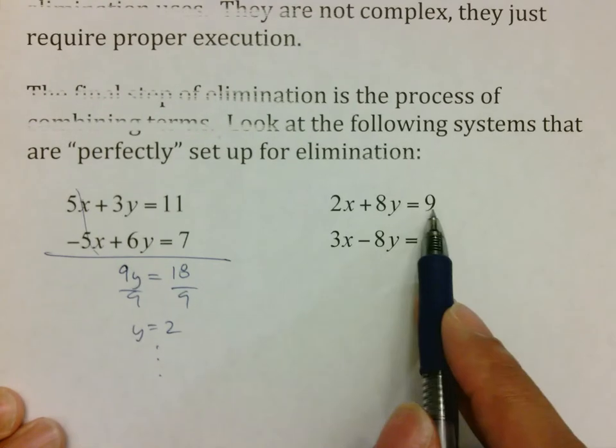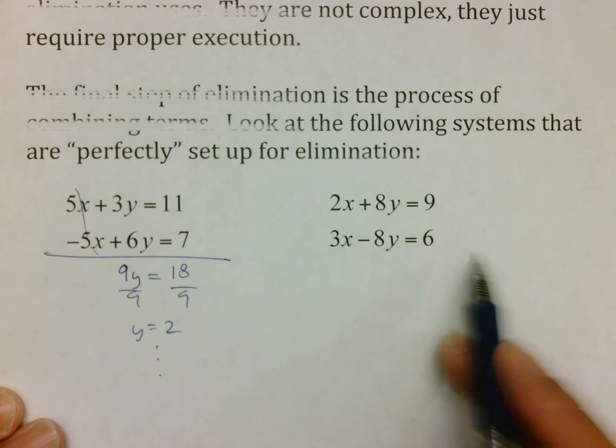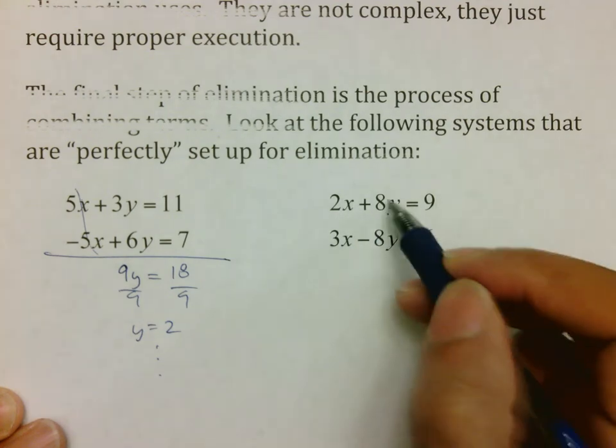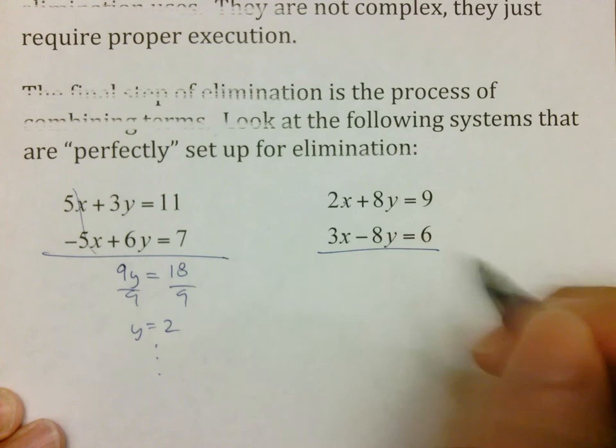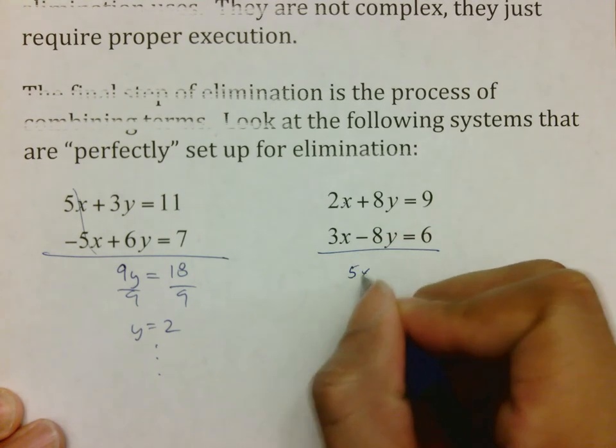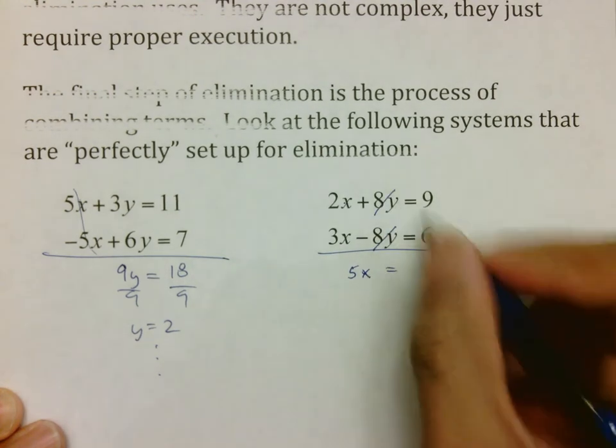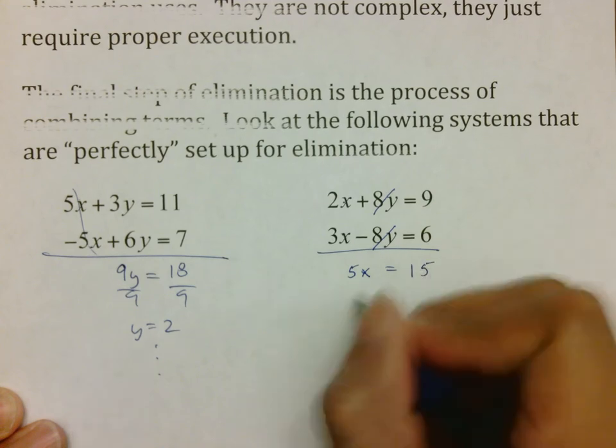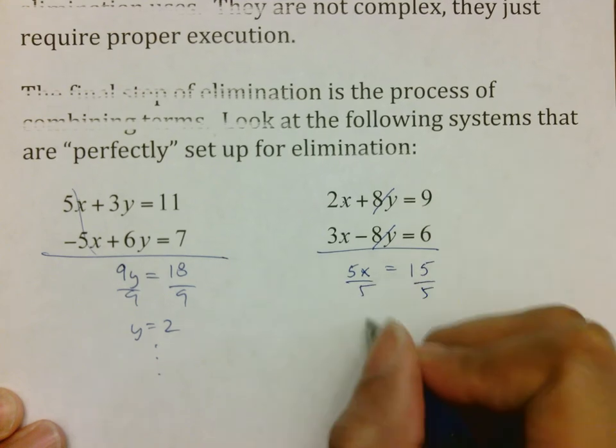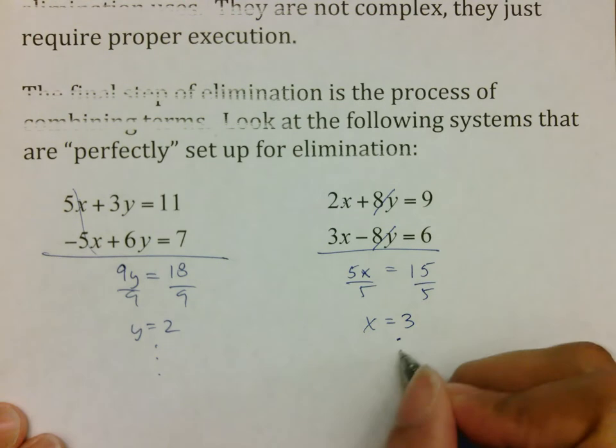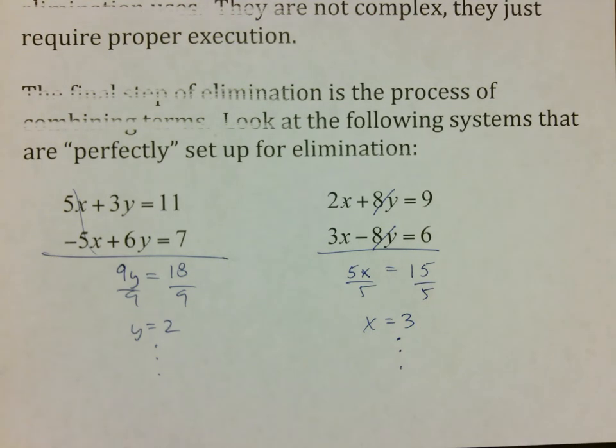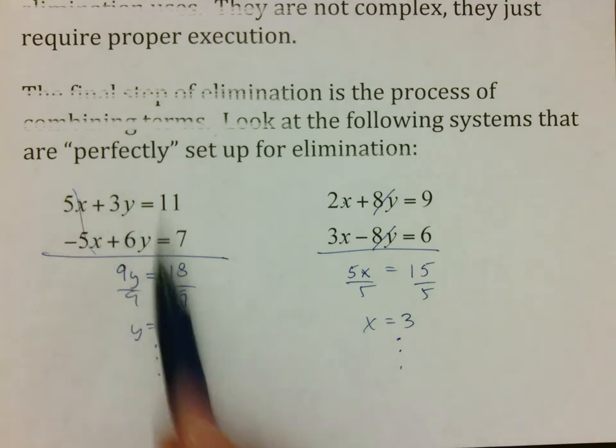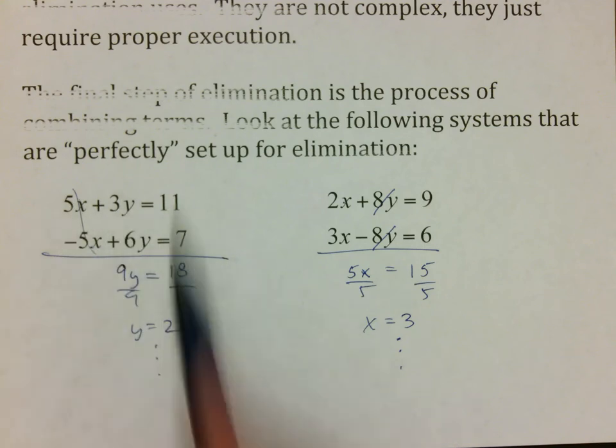In this one, you have 2x plus 8y equals 9, 3x minus 8y equals 6. My x's don't go away, but notice that my y's are opposite. So 2x and 3x make 5x. Negative 8y, positive 8y, cancel out. 9 and 6 make 15. And whenever I solve this, I end up with x equal to 3. I just want you to understand that after you set up your opposites, all you honestly have to do is just combine your terms. x with x, y with y, constant with constant. Notice how we used opposites to eliminate one term. We just have to learn how to create them.